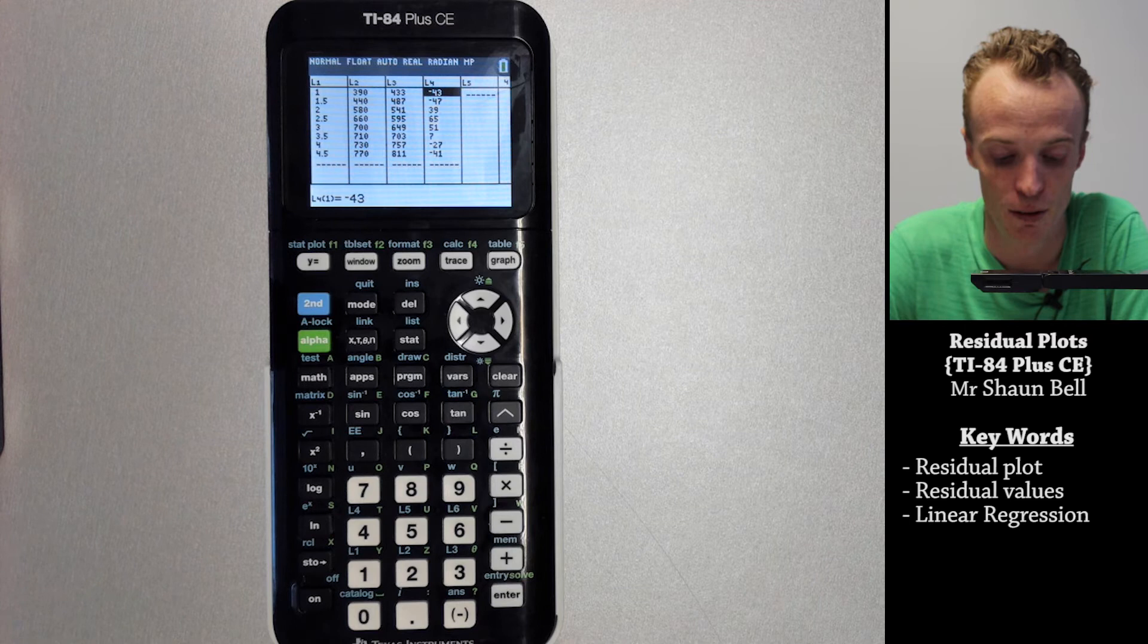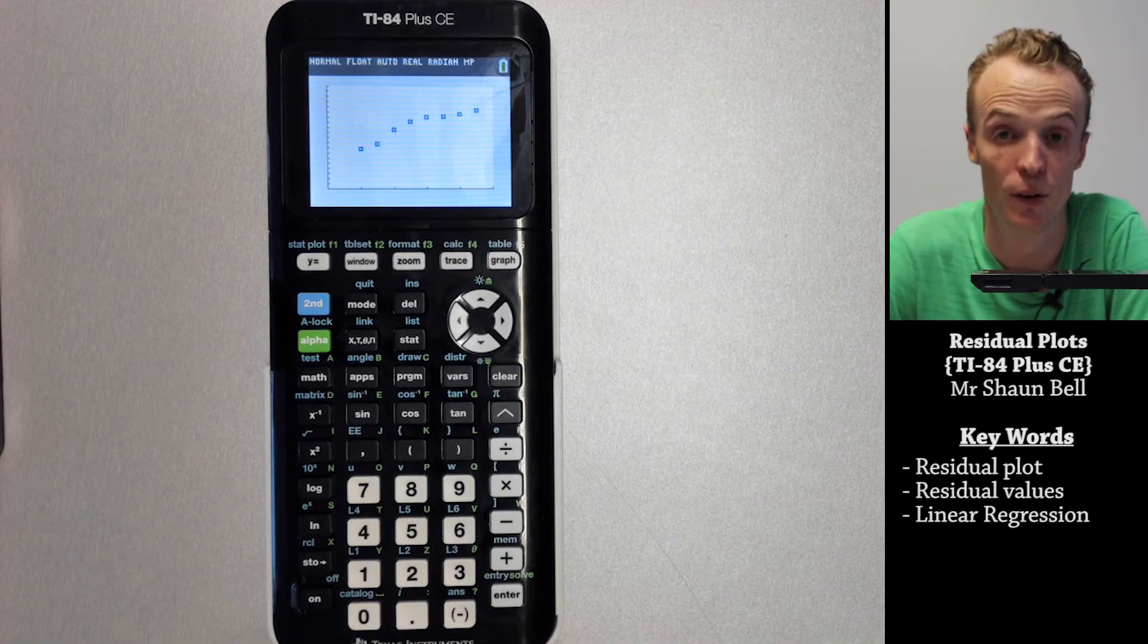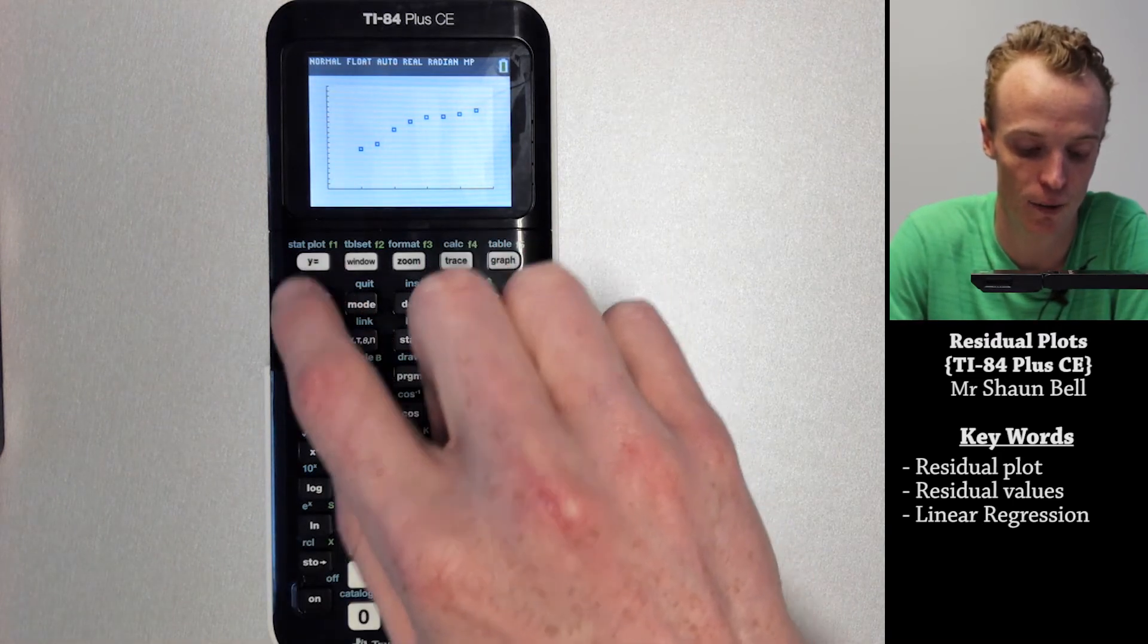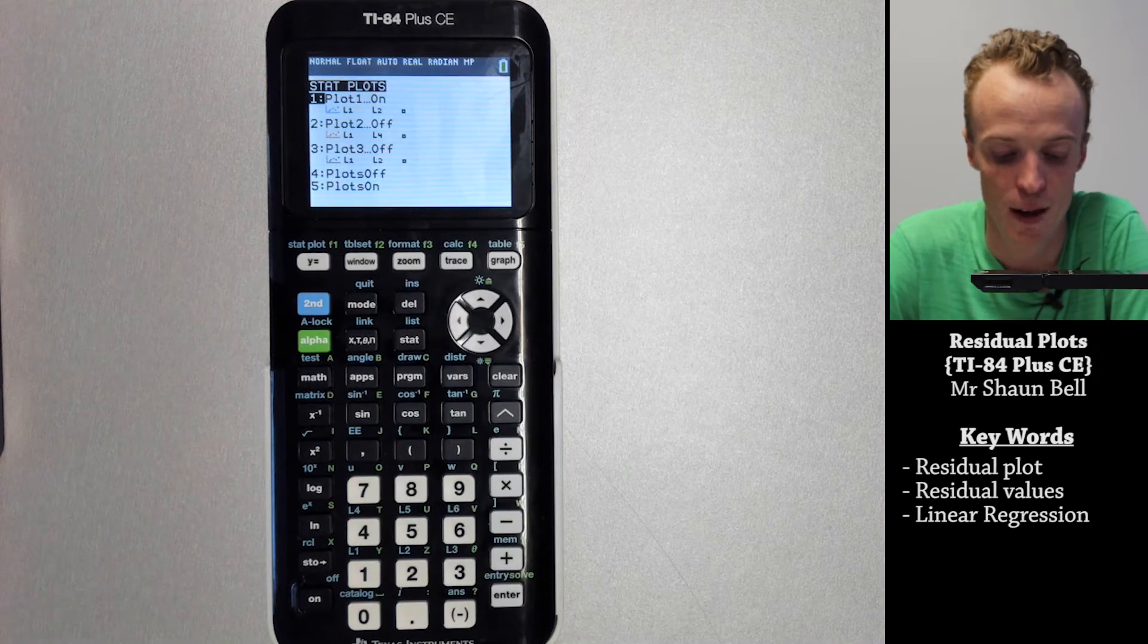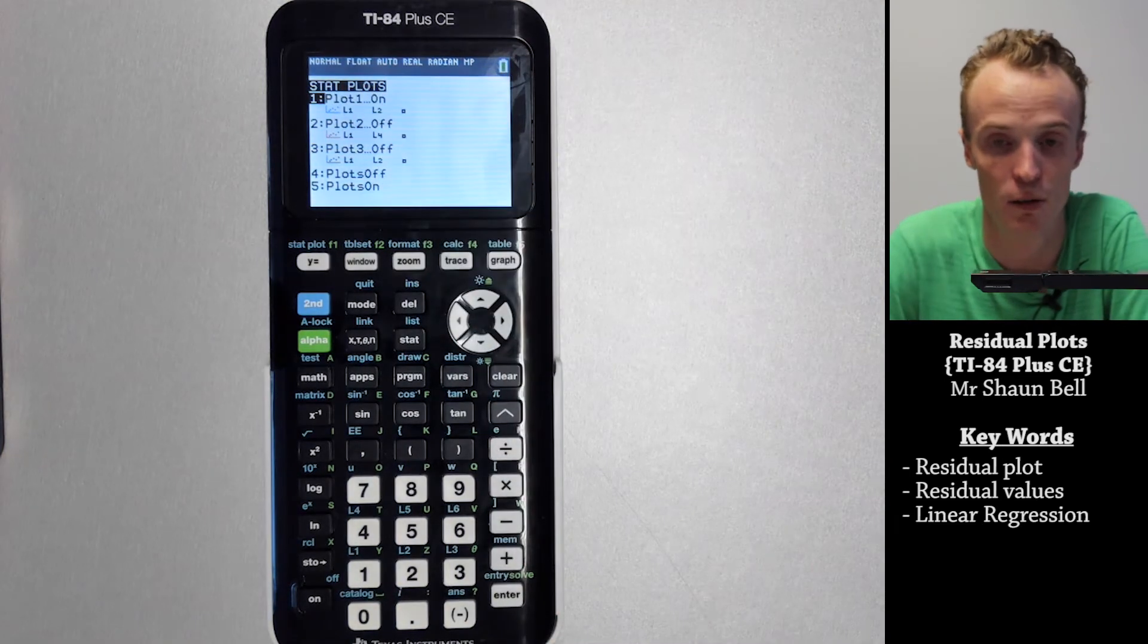Previously the graph I was graphing was list one with list two, so I need to change this. To change it I go to second and stat plot, and you'll notice here that I've still got this first plot one active.